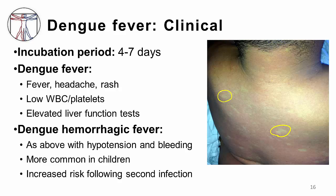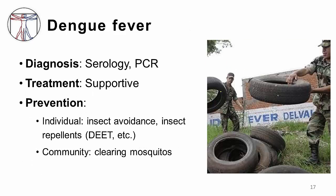Dengue can progress in a second phase to dengue hemorrhagic fever, which can be quite severe. Patients can develop hypotension, shock, and severe bleeding. This is more common in children and in patients who have been infected with one type of dengue and then later infected with a second type. Diagnosis is by serological testing — IgM testing or PCR testing. Treatment is supportive, as there are no antivirals available; if they develop dengue hemorrhagic fever, support with blood products and IV infusions. Prevention involves avoiding insect exposure using DEET and avoiding high-risk areas. At a community level, clearing standing water in items like tires removes breeding grounds for mosquitoes.